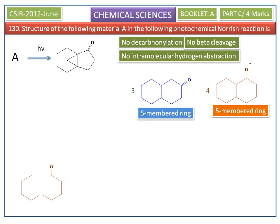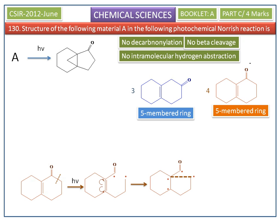We do alpha cleavage in the fourth compound, which gives a di-radical. Then the olefin bond is cleaved to give new di-radicals. These di-radicals are recombined in a new way, giving a product. But this product does not match the product given in the question, so the fourth option is not A.